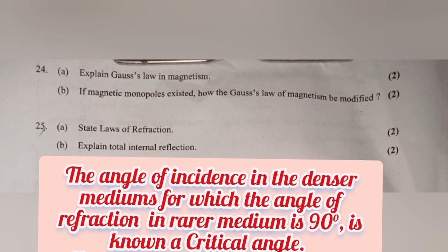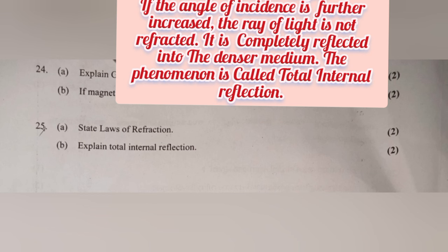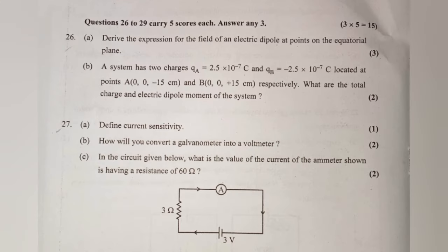If the angle of incidence is further increased beyond the critical angle, the ray of light is not refracted; it is completely reflected into the denser medium. This phenomenon is called total internal reflection. Q26a: Derive the expression for the field of an electric dipole at points on the equatorial plane.